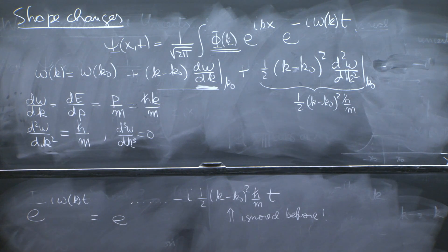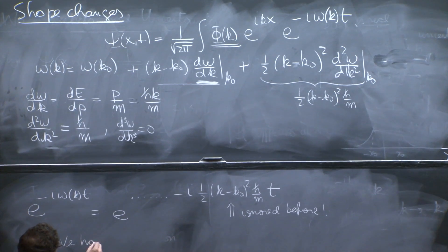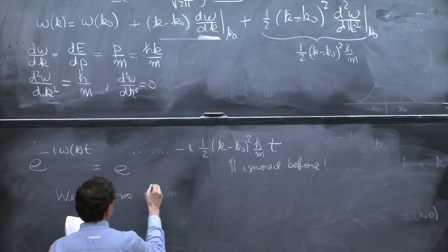But now, we'll just say that we expect, therefore, that the shape doesn't change as long as we can ignore this phase. And this phase would start changing shape of the object. So our statement is going to be that we have no shape change.